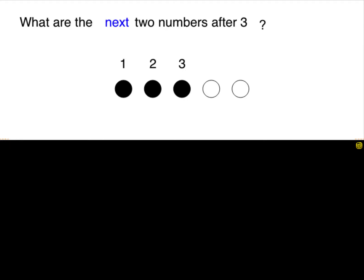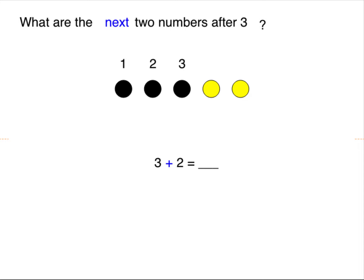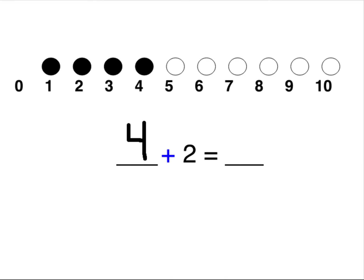Counting by one I think you should be able to do, but most of you should also be able to count two more in your head. If we think of three plus two more: three, four, five. So in your math sentence, three plus two equals how many altogether? Five. So if we start at four, four plus two more is six. You could do it in your head — four, five, six. You can do it with circles. Five plus two more is seven.